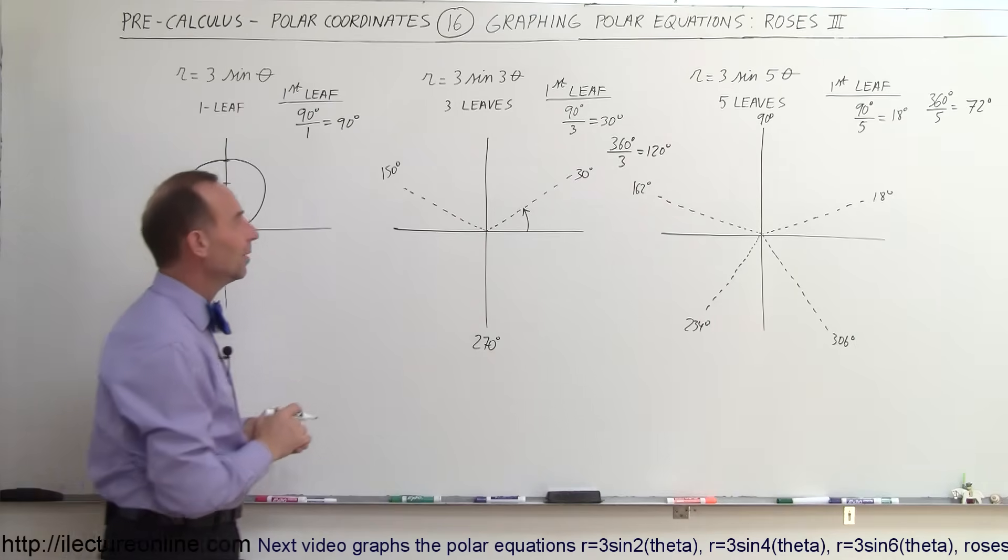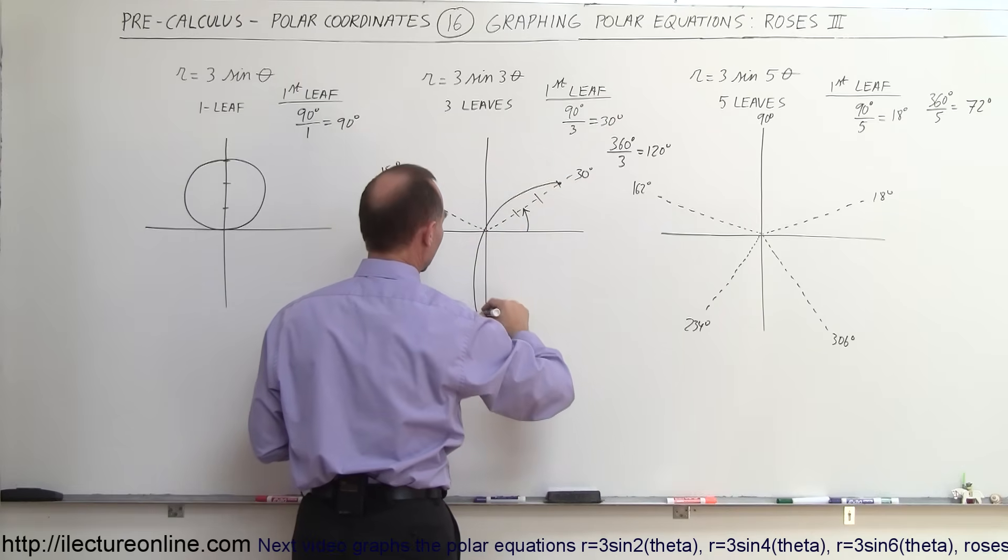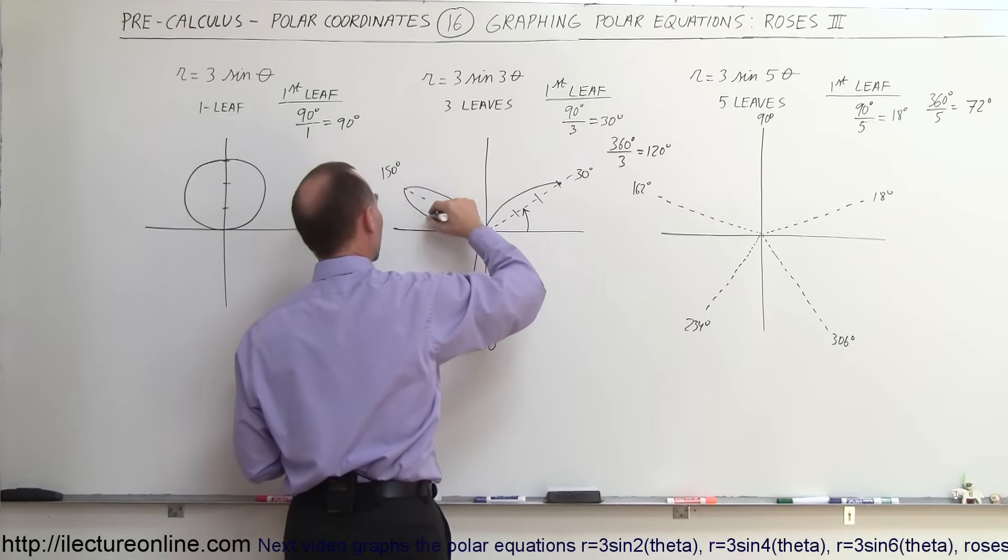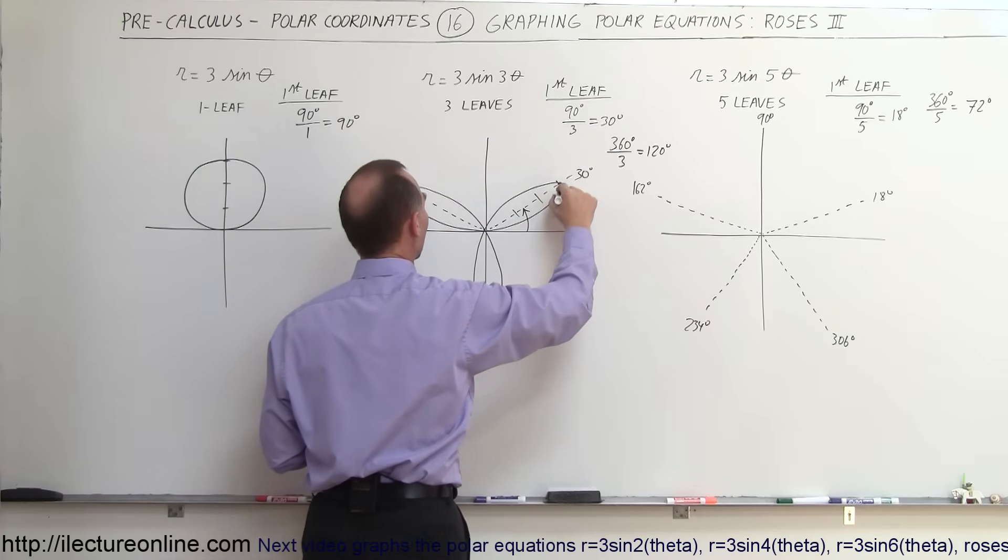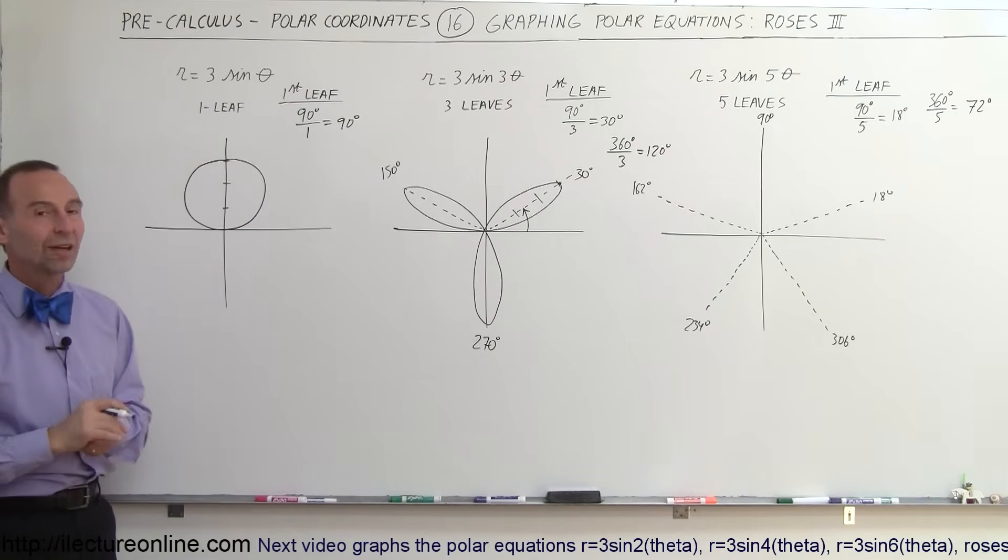The 3-leaf is a little nicer like that. So we start at the first one over here. So 1, 2, 3, start right there. So we go like this, we go like this, let me draw like this, and we come back around like this. And there's your 3-leaf rose for r equals 3 sine of 3 theta.